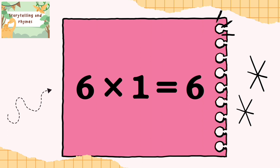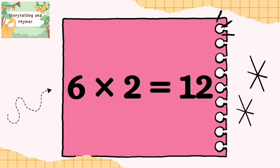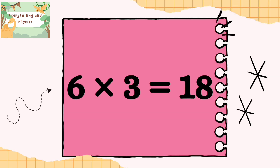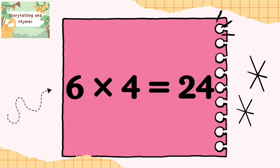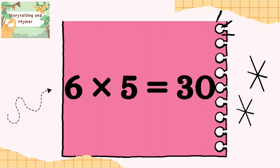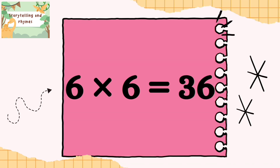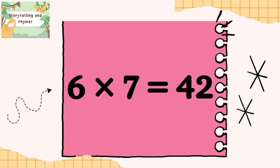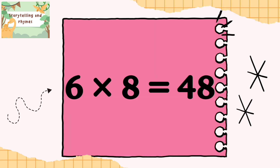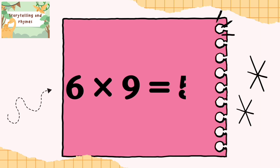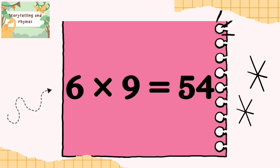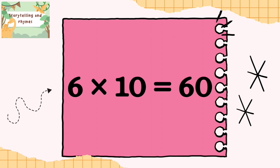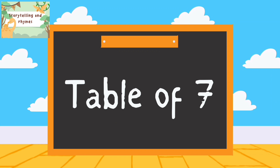Table of 6: six ones are 6, six twos are 12, six threes are 18, six fours are 24, six fives are 30, six sixes are 36, six sevens are 42, six eights are 48, six nines are 54, six tens are 60.